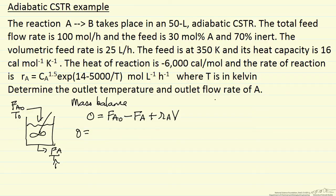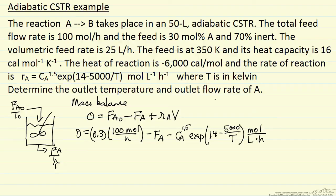I'm going to substitute in numerical values. 30% of the feed is A, and the feed is 100 moles per hour. FA is unknown. R sub A is the concentration of A to 1.5 power, and then this exponent that shows how the reaction rate depends on temperature. This is in moles per liter per hour. And then we multiply by the volume, 50 liters.